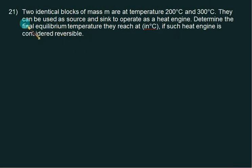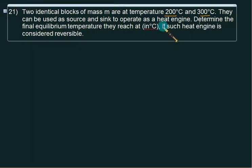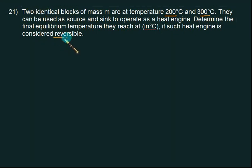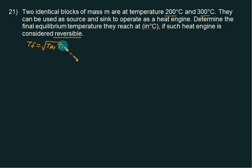We are given two identical blocks of mass M at temperatures 200 and 300. They can be used as a source and sink. Determine the final equilibrium temperature in degrees Celsius if such a heat engine is considered reversible. When reversible, the final temperature will be the geometric mean of the two temperatures in Kelvin. So T_final equals the square root of T_a1 multiplied by T_b1.